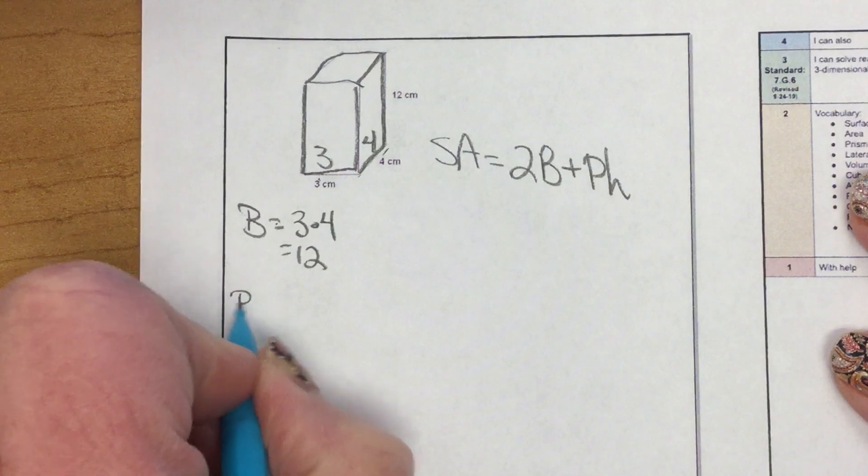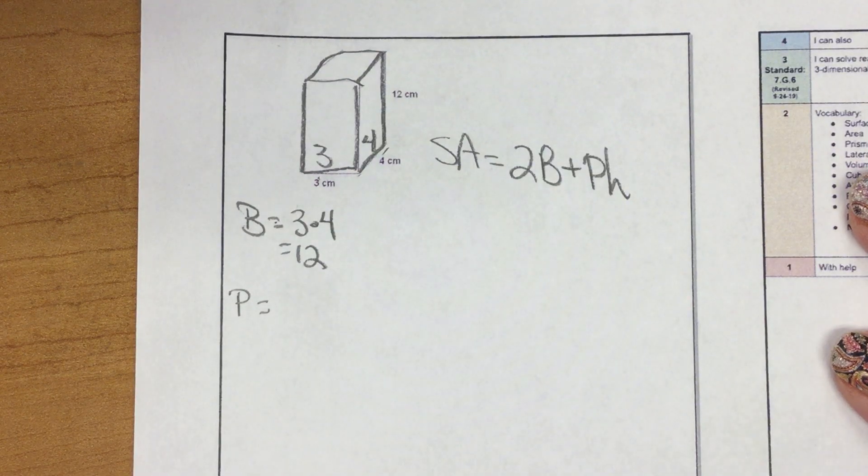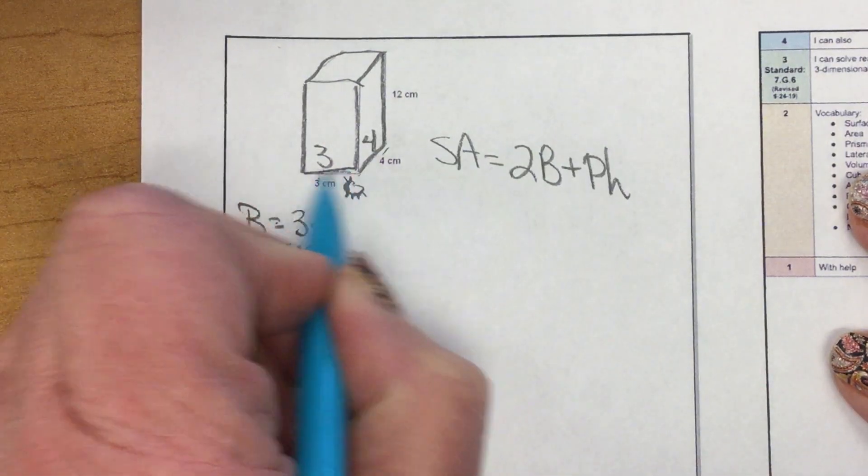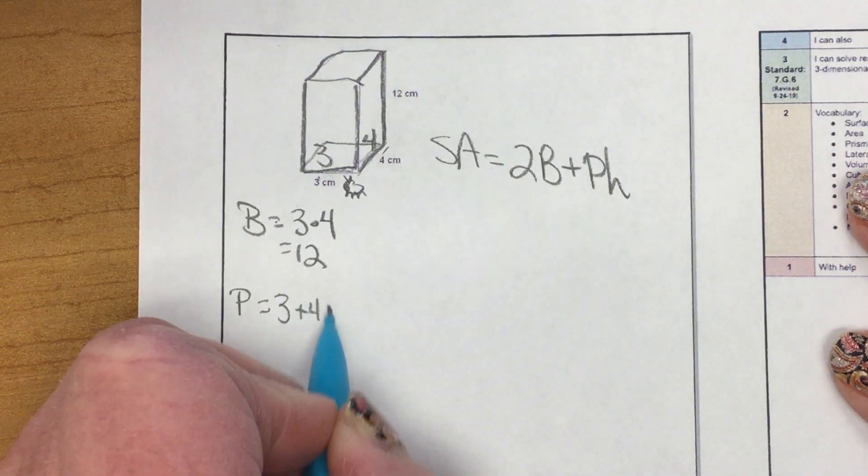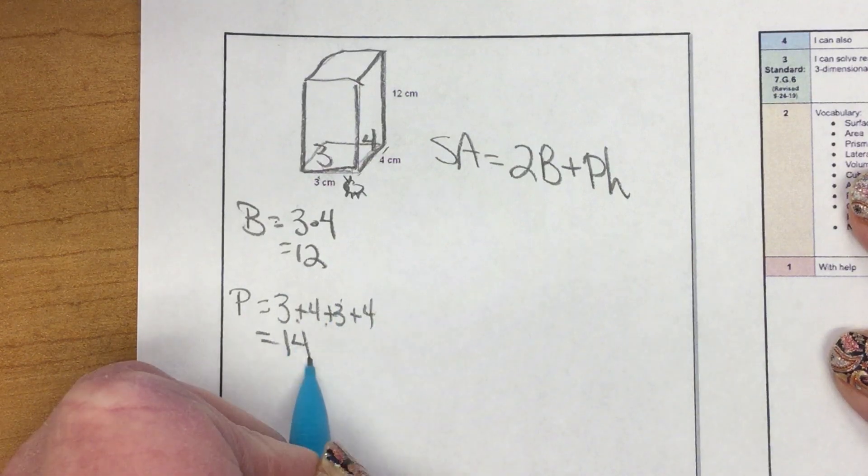Perimeter of the base. I could use my formula 2L plus 2W, or I could just be that teeny tiny little ant and walk all the way around the base. 3 plus 4 plus 3 plus 4, 14.